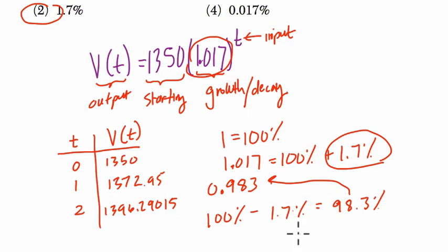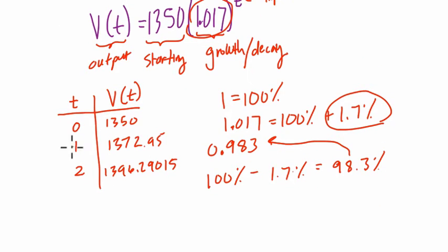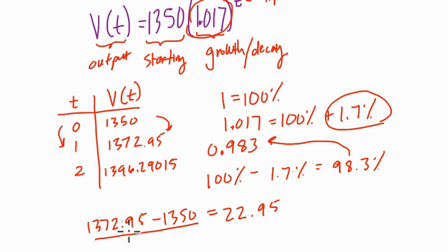So to figure out the percent change, we want to figure out what happened between any two points. I'm going to use these two points right here because they're a lot friendlier. So 1,372.95 minus 1,350, that change is 22.95, and that is the change over one year.